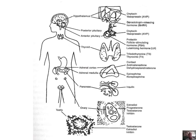Your gonads are your ovaries and testicles. Then we have the posterior and anterior pituitary, which produces oxytocin, vasopressin, prolactin, follicle-stimulating hormone, and luteinizing hormone. Remember that follicle-stimulating hormone and luteinizing hormone go directly with the reproductive system.